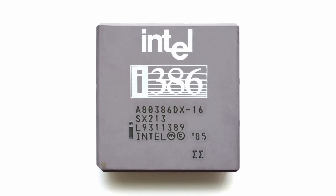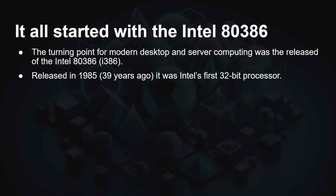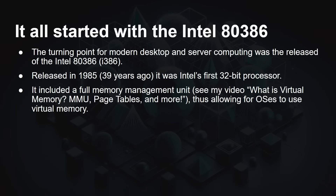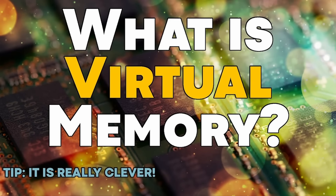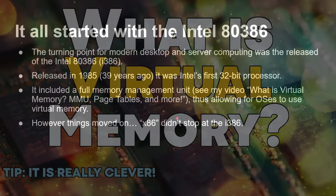Let's go back 39 or so years to the Intel 80386, the 386 for short. It really was a turning point for modern desktop and server computing. It was released in 1985 and it was Intel's first 32-bit processor, and it included a full memory management unit, which means it could run OSes that use virtual memory. I do have a video on this channel — 'What is virtual memory? MMU, page tables and more' — I highly recommend you check out that video.